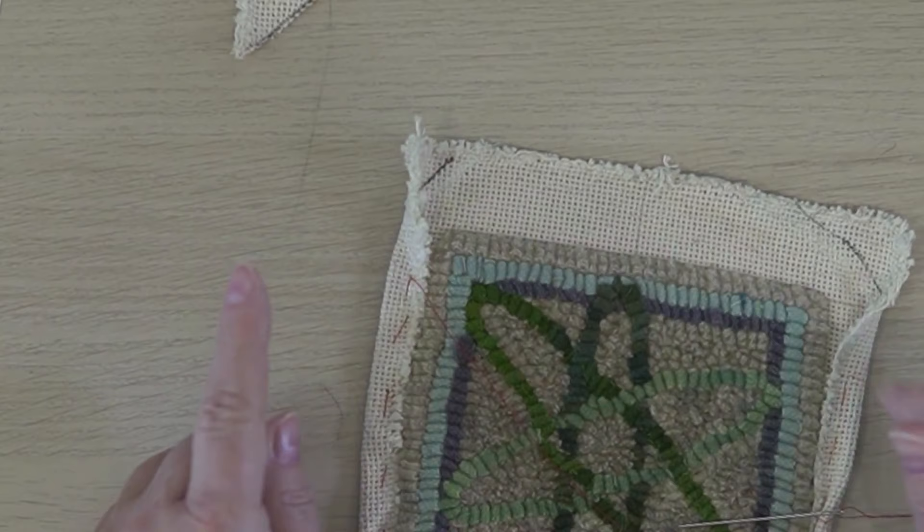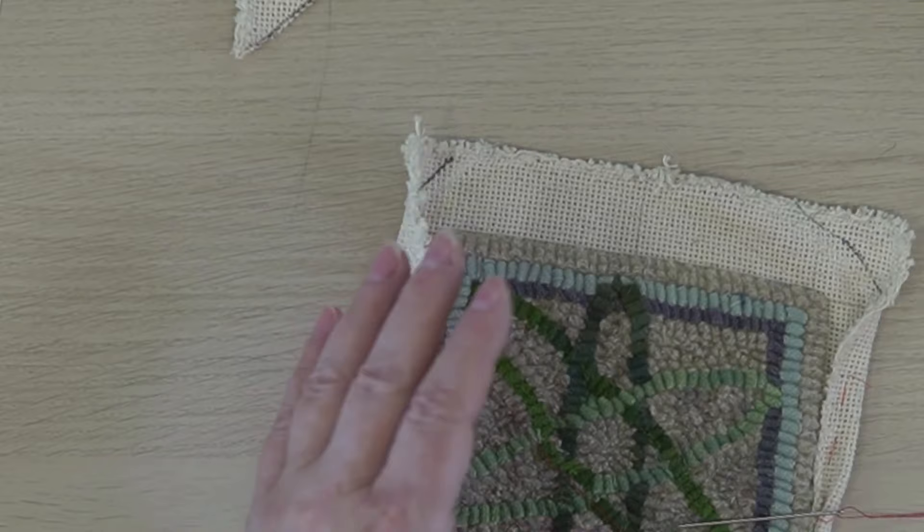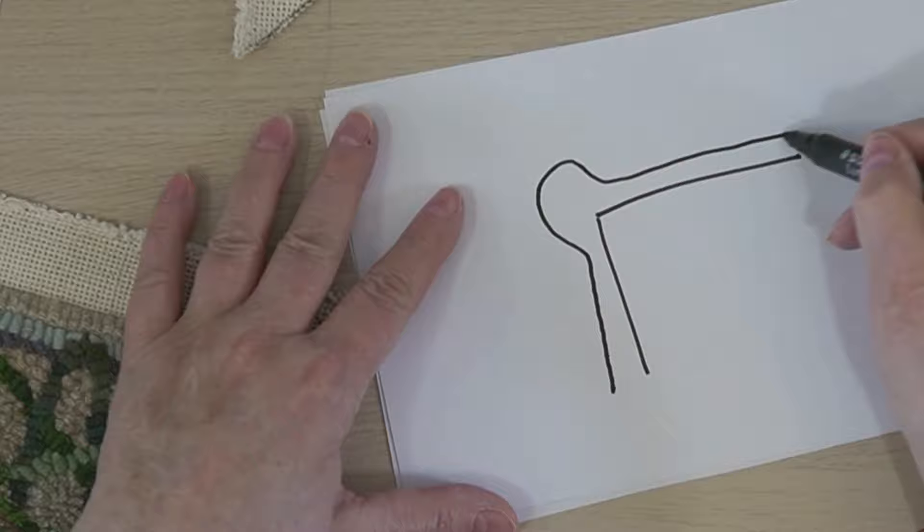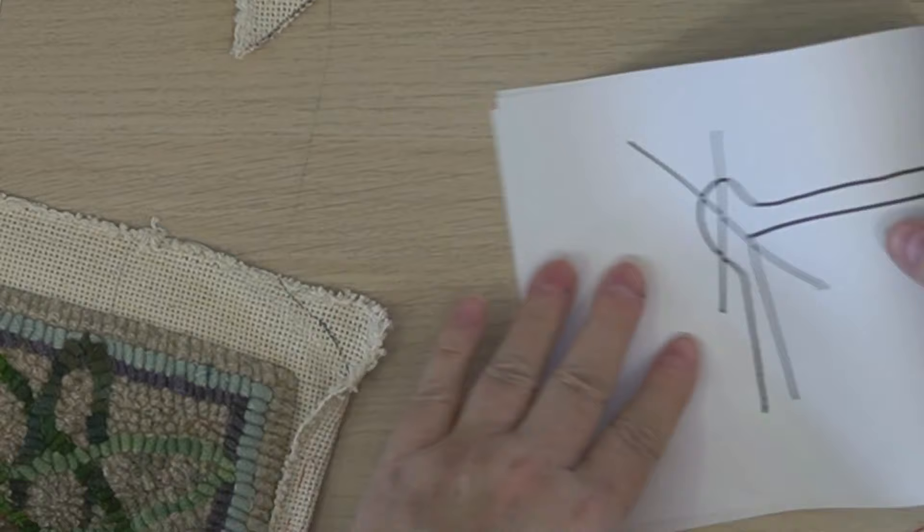It's time to finish basting down this corner. Now what I want to avoid at all cost is what I call a dog ear. A dog ear on your whipping is when you have your hooking here and then your backing comes up and does this. We want to avoid that at all costs.